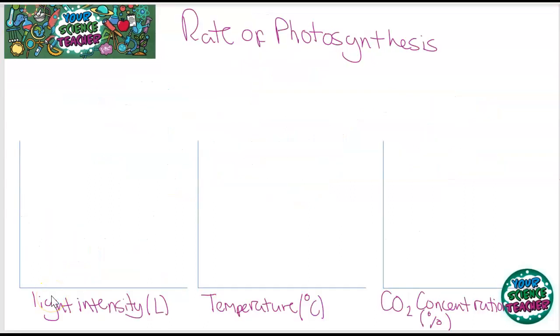We're now going to look at factors that can affect the rate of photosynthesis, and there's three: light intensity, temperature, and carbon dioxide concentration. Now, you might have noticed that in summer, plants grow a lot quicker than in the winter. That is because it's warmer and there's more sunlight for that plant.